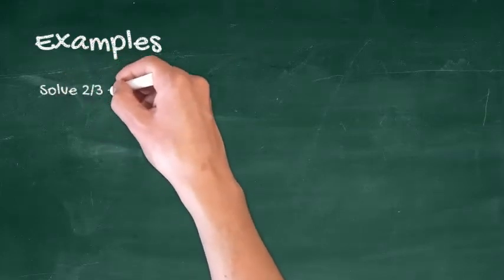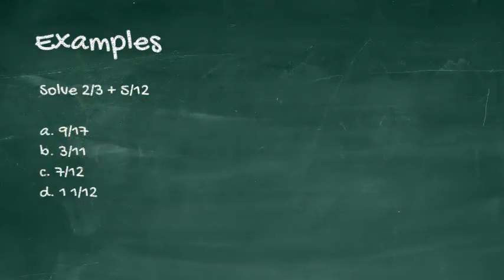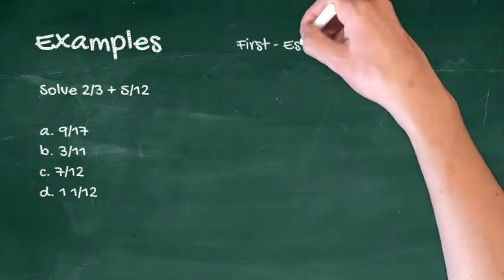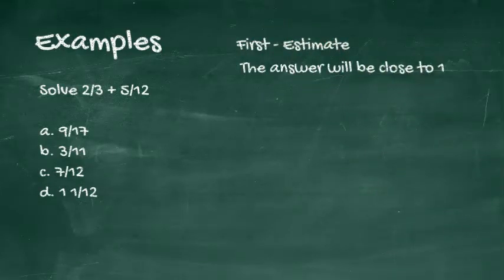Here are a few basic math examples of how this works. Solve two-thirds plus five-twelfths. First, estimate the answer. Two-thirds is more than half and five-twelfths is about half, so the answer is going to be very close to one. Next, eliminate.